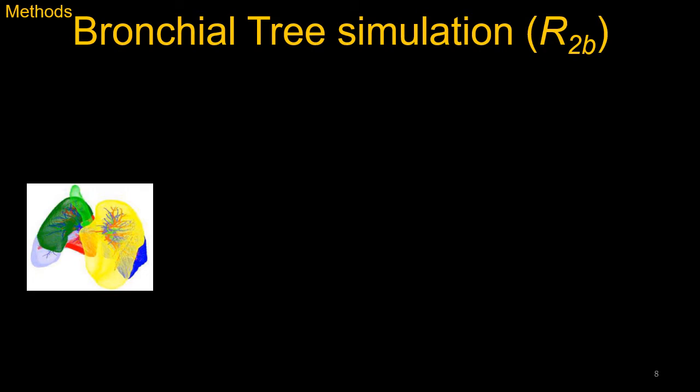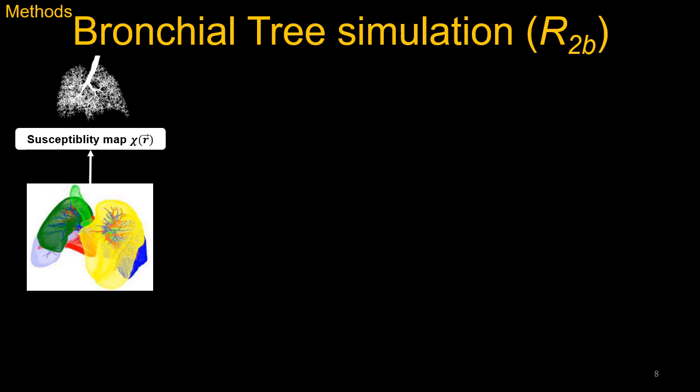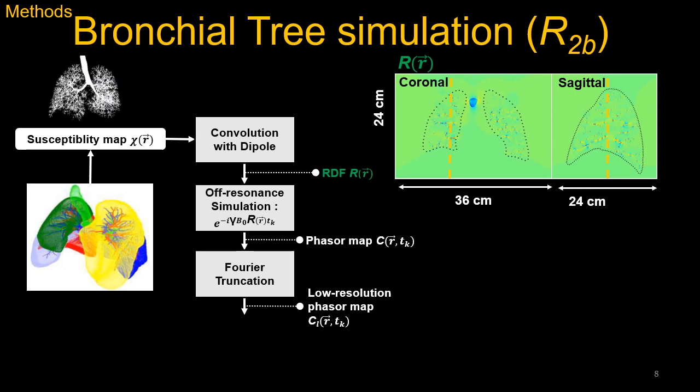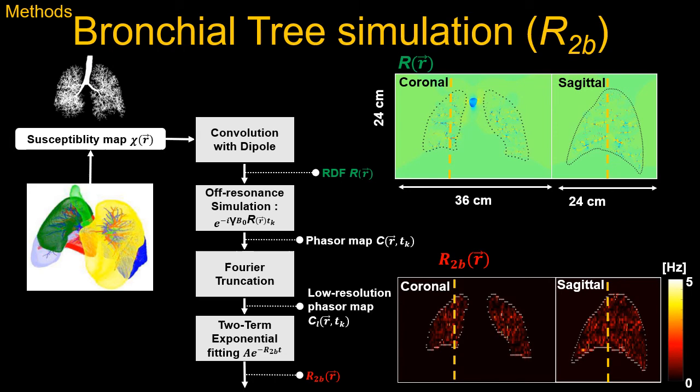Now let's turn to the bronchial tree. Starting from a high-resolution 3D x-cat mask, we assign susceptibility values to the tissues. We simulate field inhomogeneity due to the bronchial tree by convolving with a dipole kernel. We then obtain the high-resolution phasor map based on the TE, reduce to the desired resolution with Fourier truncation, and finally perform exponential fitting to obtain R2b. The corresponding parenchyma mask at the desired resolution was generated using similar steps.